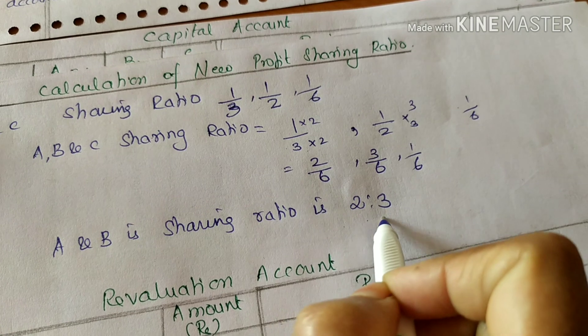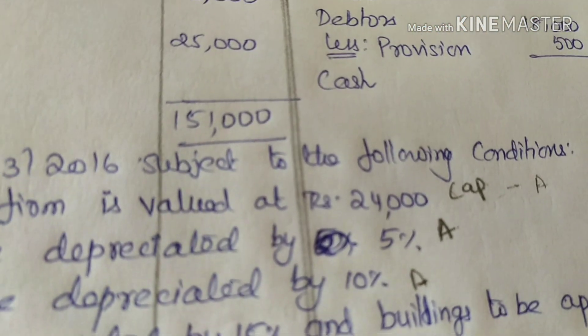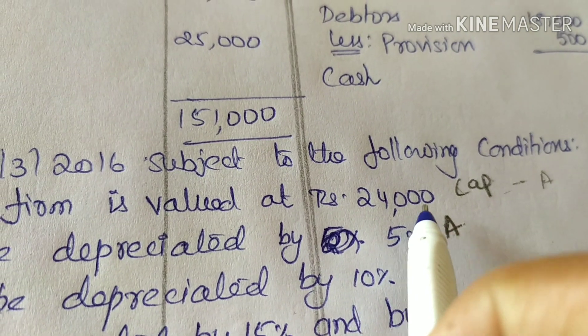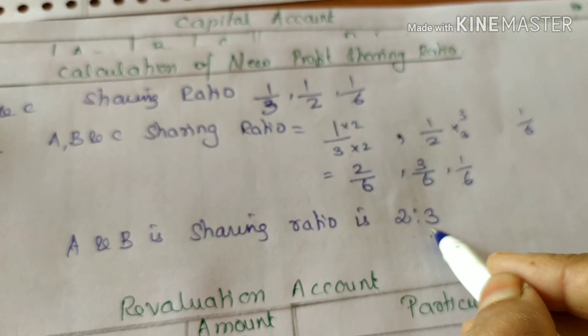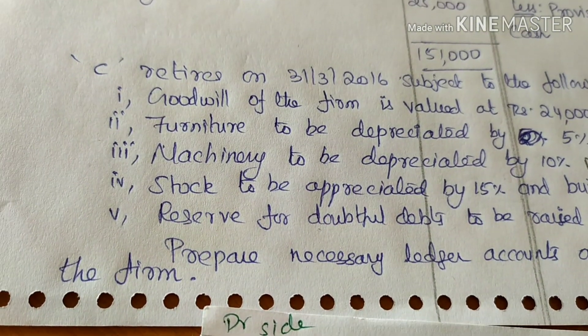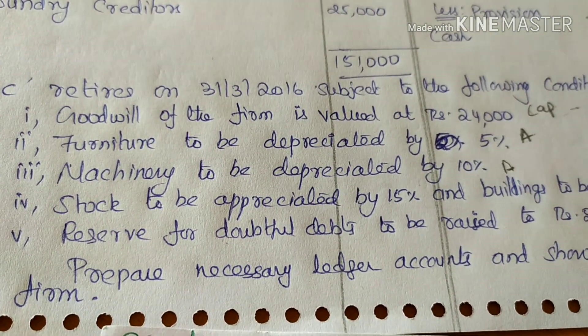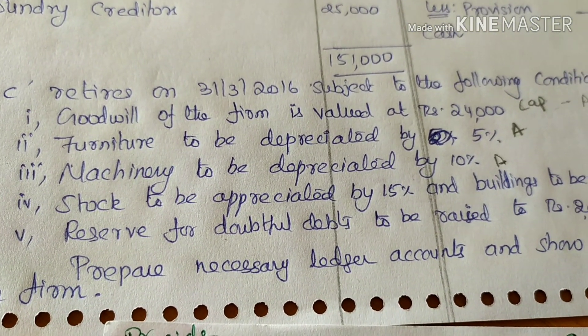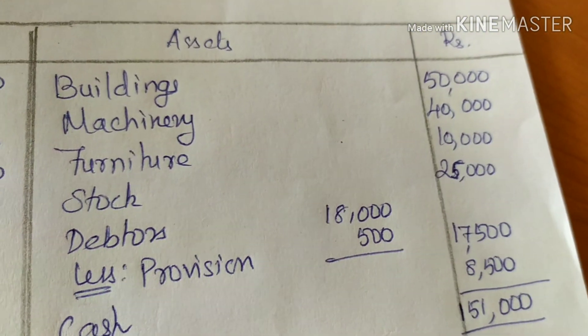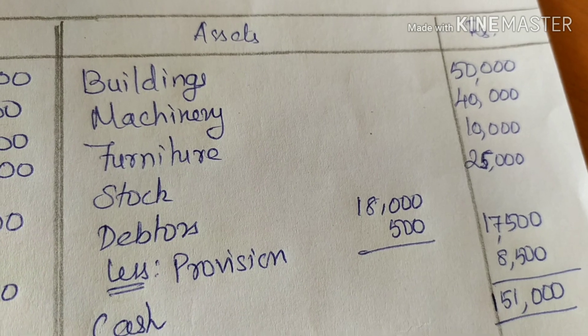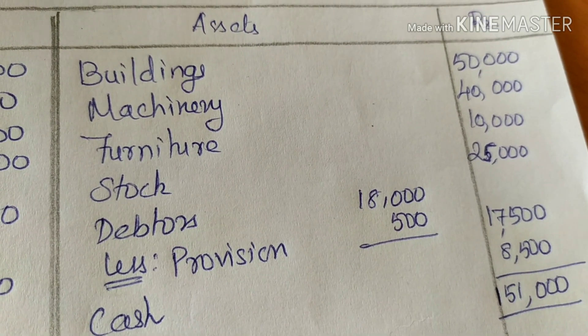The new profit sharing ratio between A and B is 2 to 3. Now for the revaluation account: goodwill does not appear here. First entry — furniture is to be depreciated by 5%. Furniture value is 10,000. So 10,000 into 5% = 500. Depreciation on furniture is 500.